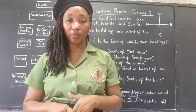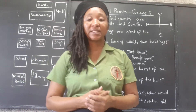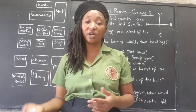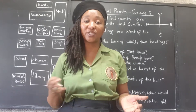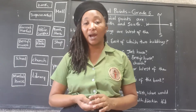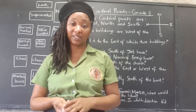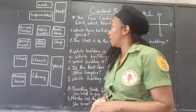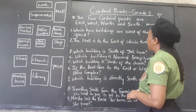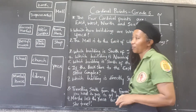west, north, and south. So we're going to see if we can give the relation of one place to the other using the cardinal points to describe that relationship. The four cardinal points are east, west, north, and south.